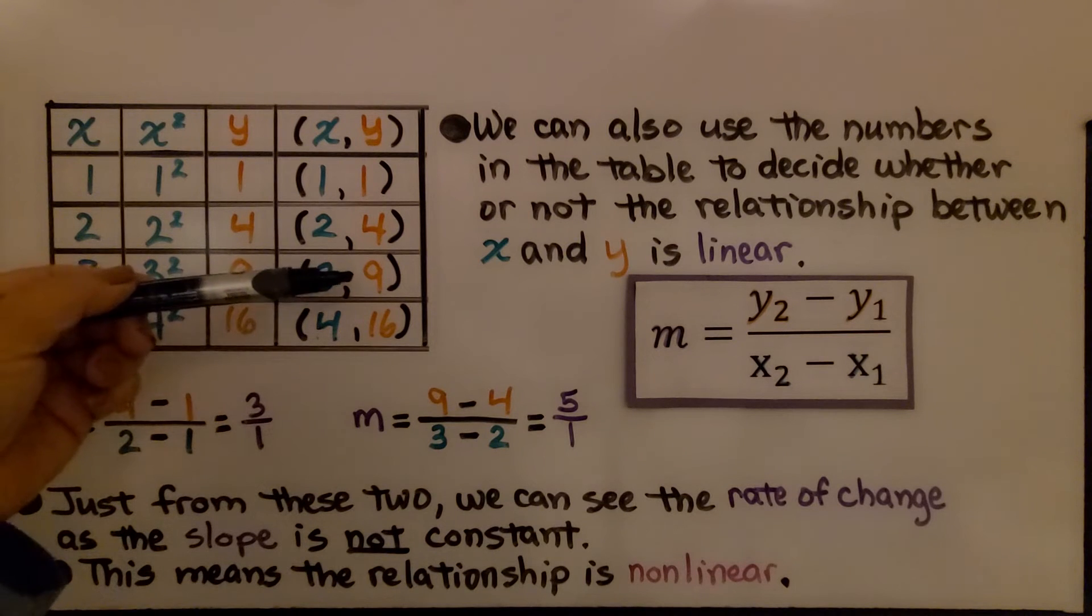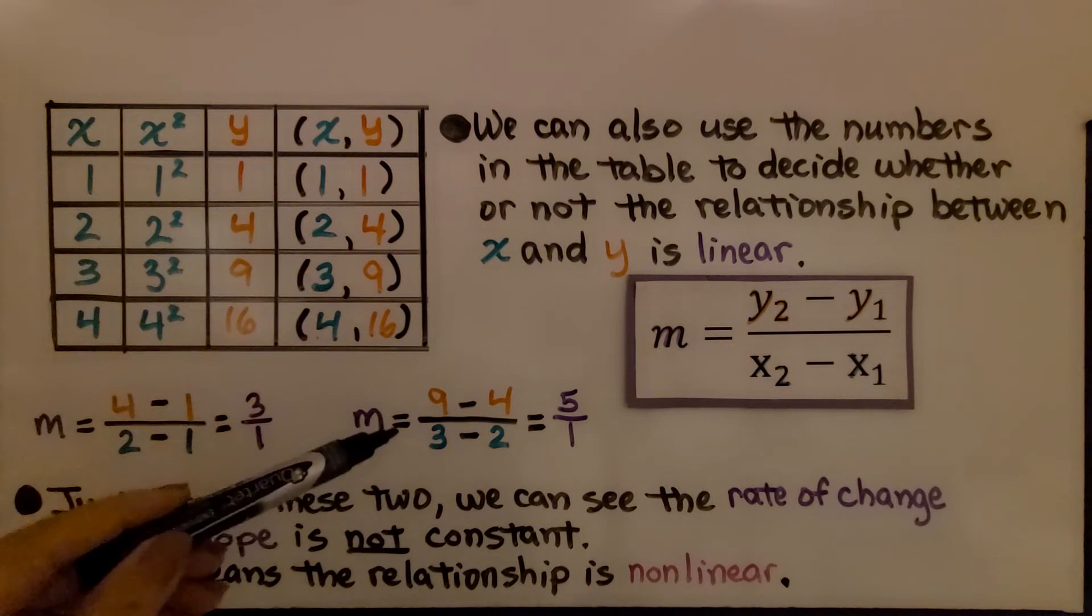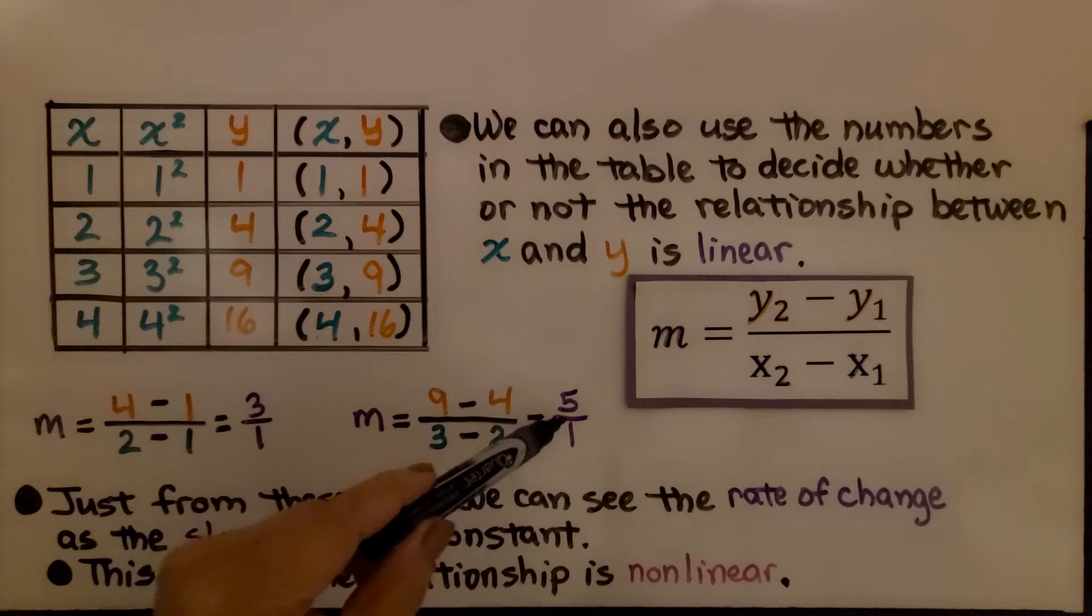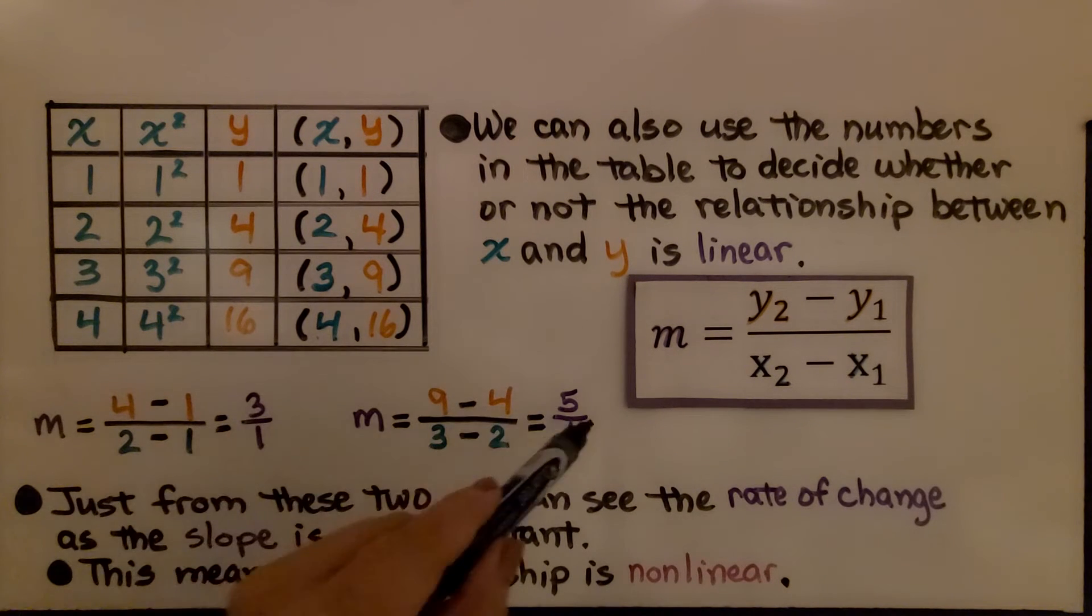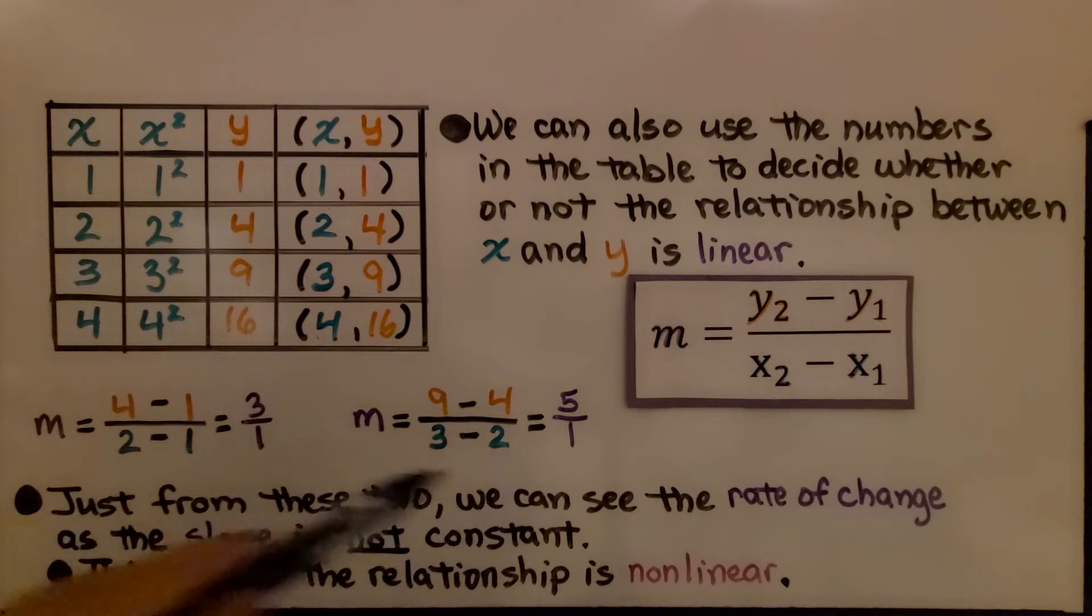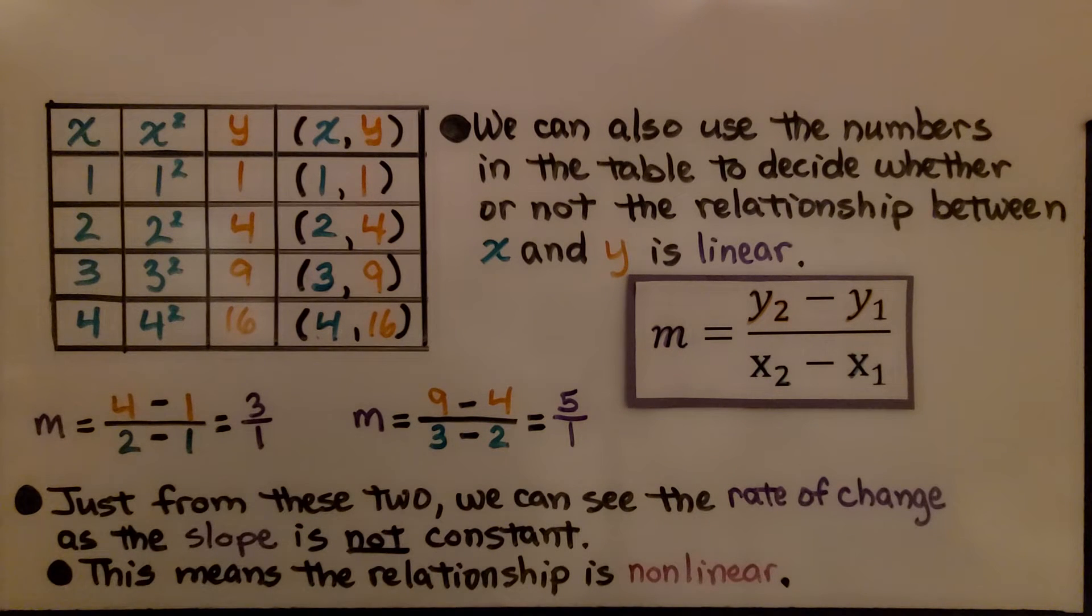If we choose this as our second one and this is our first one, we end up with a slope of 5 or 5 over 1. Just from these two, we can see the rate of change as the slope is not constant. We have a 3 and then we have a 5. That's not constant. They should be all 3's or all 5's. This means the relationship is non-linear.